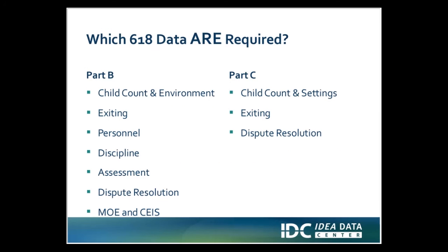So there's no mistake about what data we're talking about: we're talking about the legislative requirement for publicly reporting Section 618 data at the state level. For Part B, this means child count environment, exiting, personnel, discipline, assessment, dispute resolution, and MOECIS.